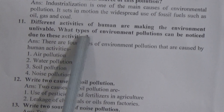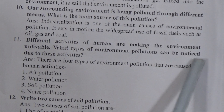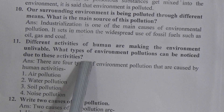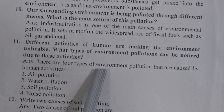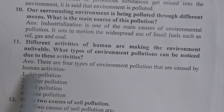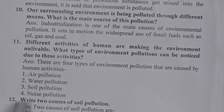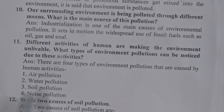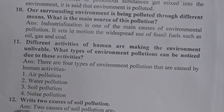Question 11: different activities of humans are making the environment unlivable — what types of environmental pollution can be noticed due to these activities? The answer is: there are four types of environmental pollution caused by human activities — first, air pollution; second, water pollution; third, soil pollution; and last, noise pollution.